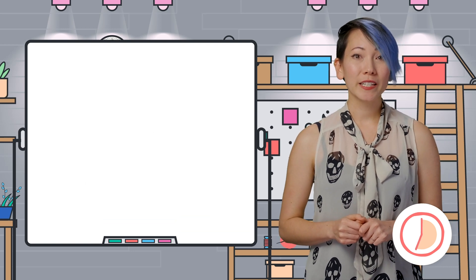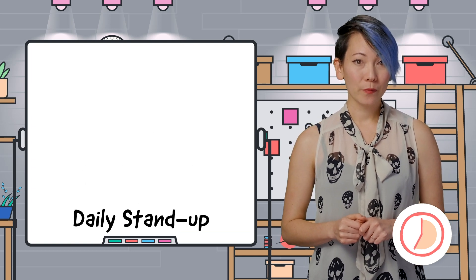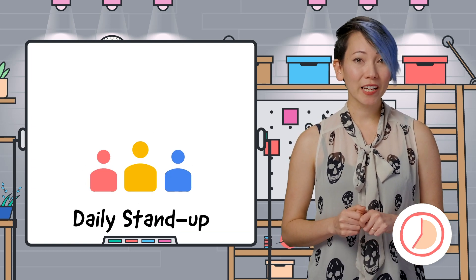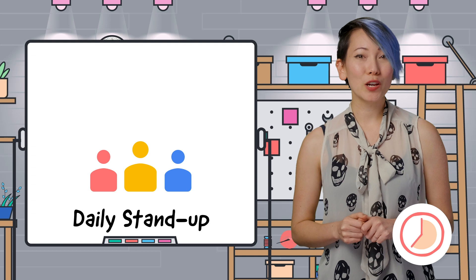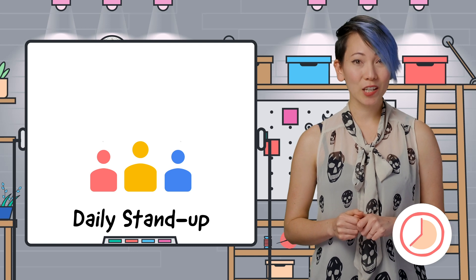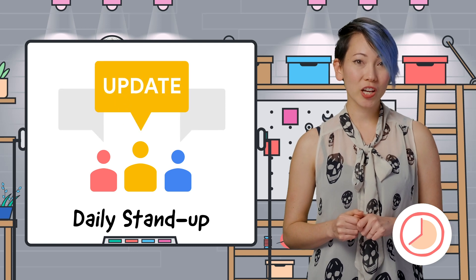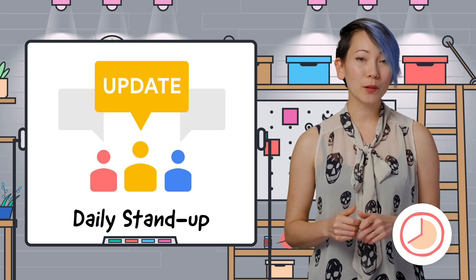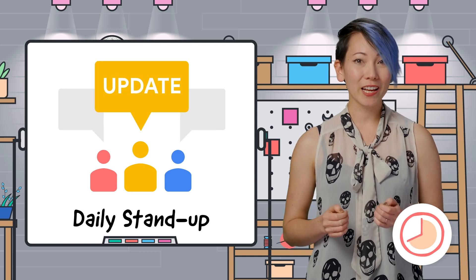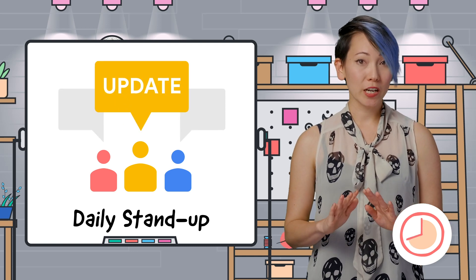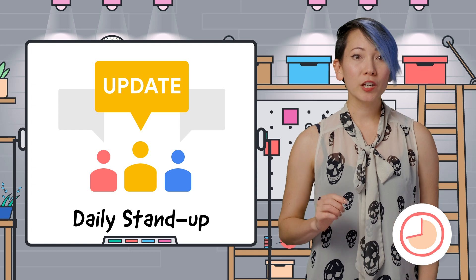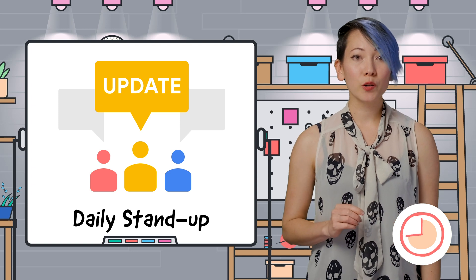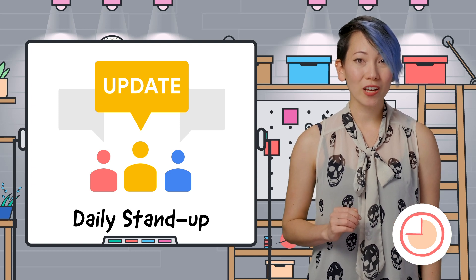Step 3: Daily stand-up. Every day, give your team the opportunity to sync on what they accomplished yesterday and what they plan to accomplish today. If there are any blockers, make sure to raise them so your project manager can help.